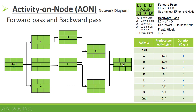The durations of the activities are: Start is 0, A is 1 day, B is 3 days, C is 5 days, D is 6 days, E is 7 days, F is 3 days, G is 5 days, and End is 0.